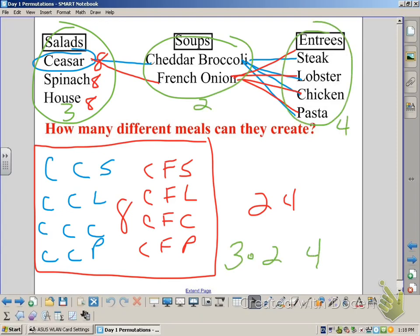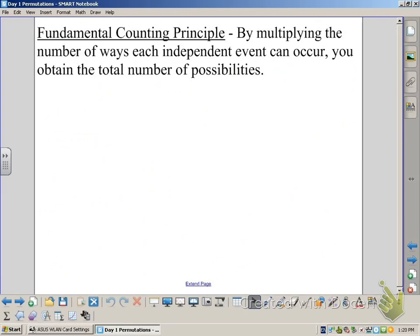Another way you could find that is to multiply three salads times two soups times four entrees for a total of 24. This is called the fundamental counting principle. You find it by multiplying the number of ways each independent event can occur, and then you get the total possibilities.